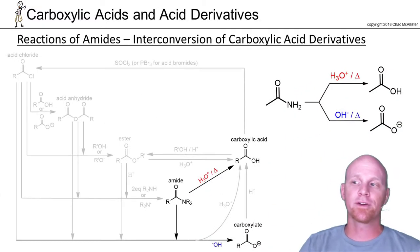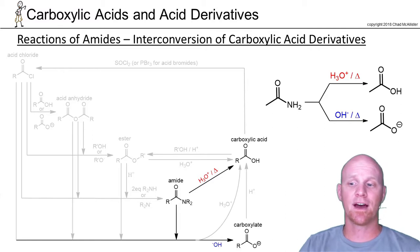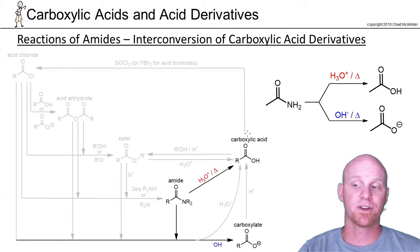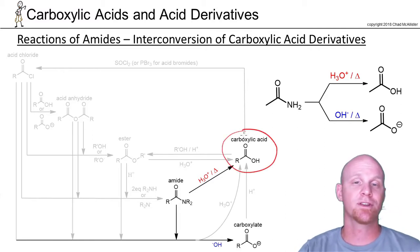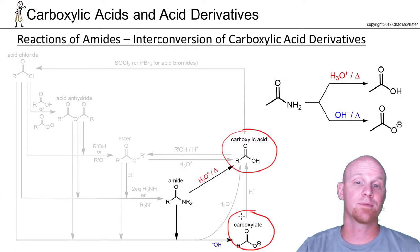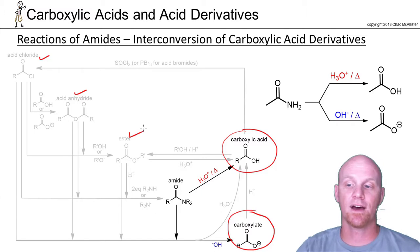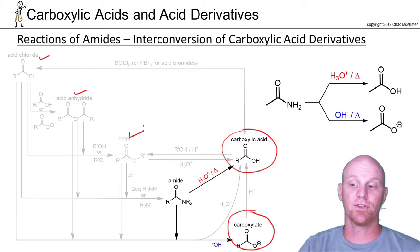Now we'll briefly look at the interconversion with carboxylic acid derivatives, and there's not much to cover. Amides are near the bottom of the reactivity chart, so you're either going to do acid hydrolysis and turn it into a carboxylic acid, or base hydrolysis and turn it into a carboxylate. You don't really have any other options — you can't convert it into a more reactive acid chloride, anhydride, or ester in any great yield. It's just acid or base hydrolysis.